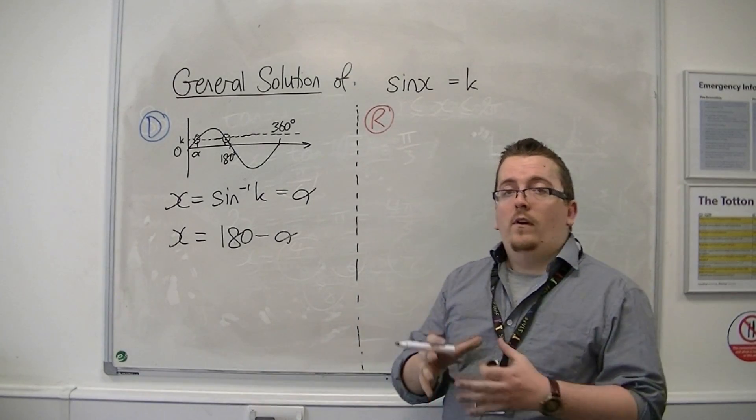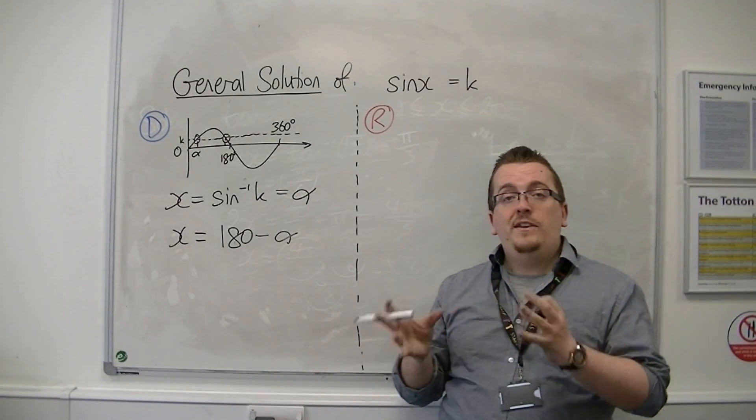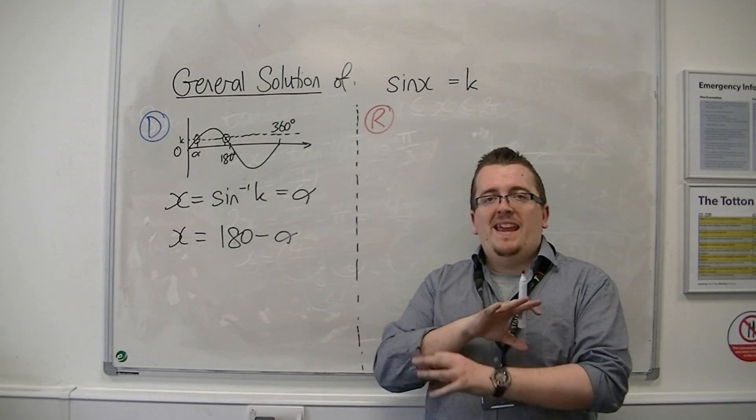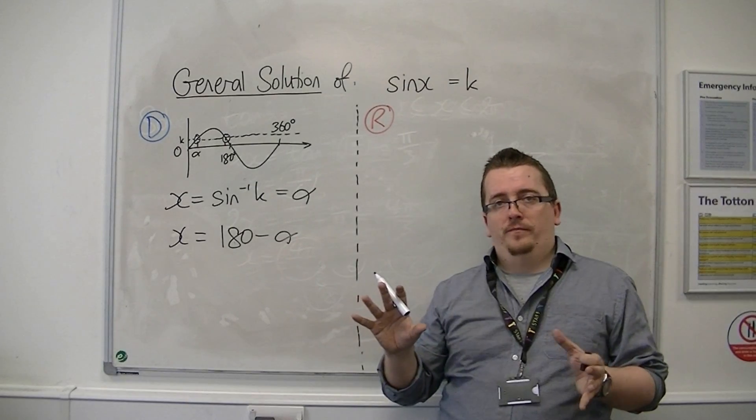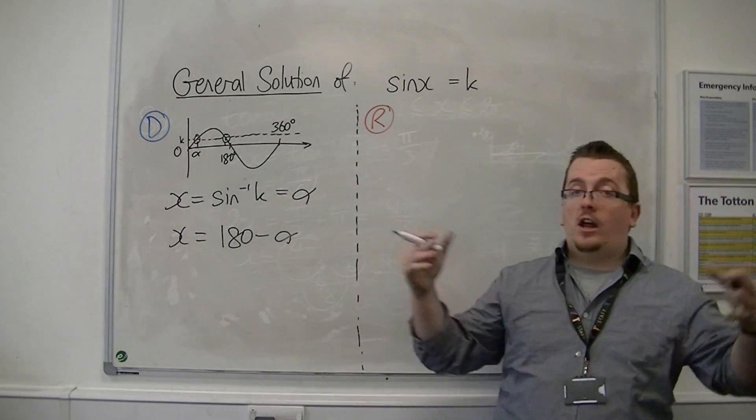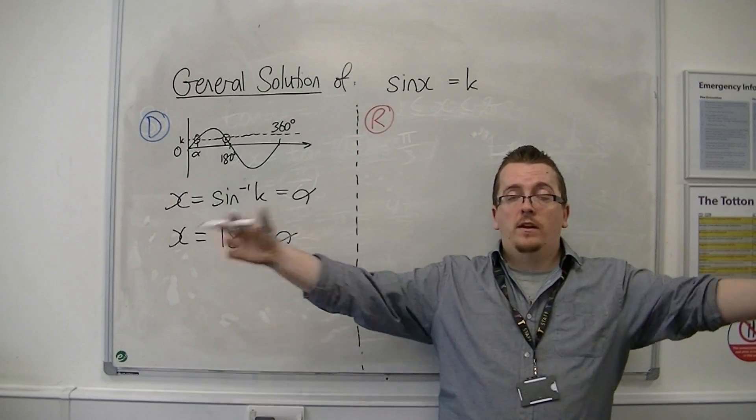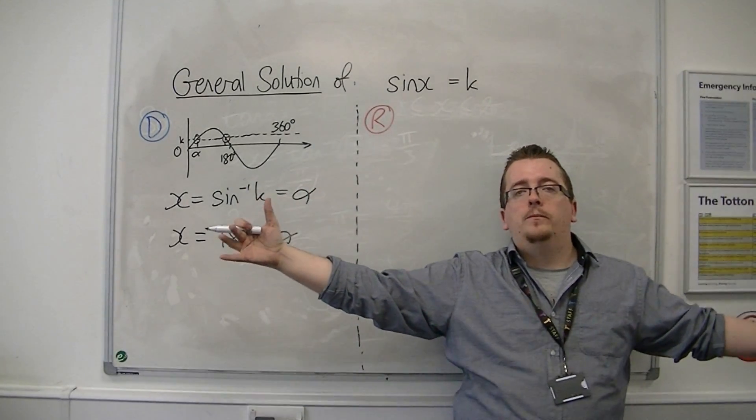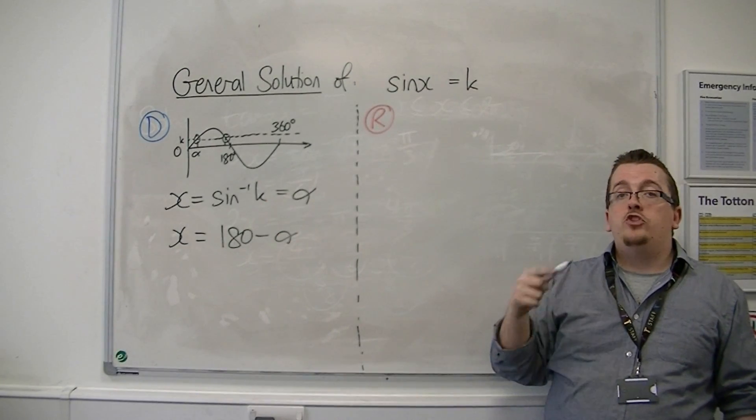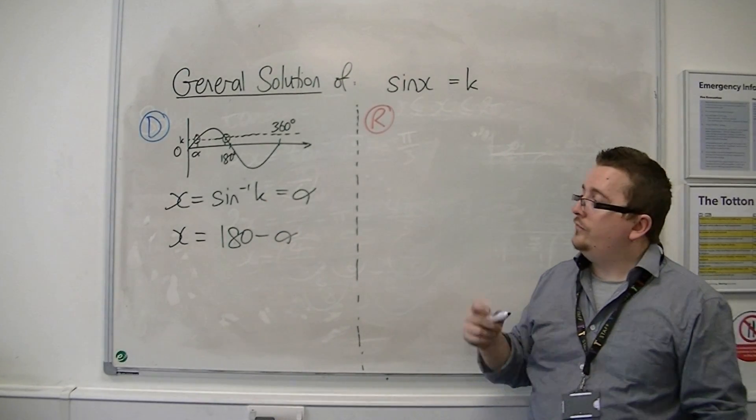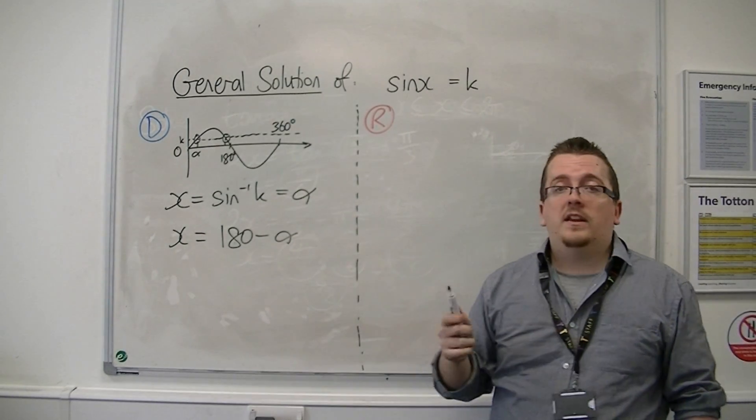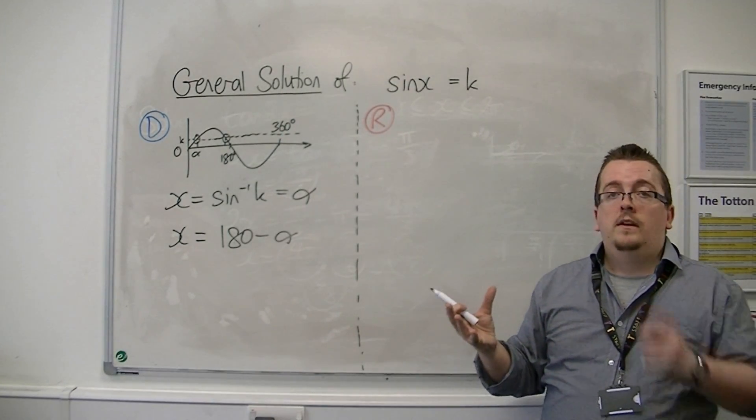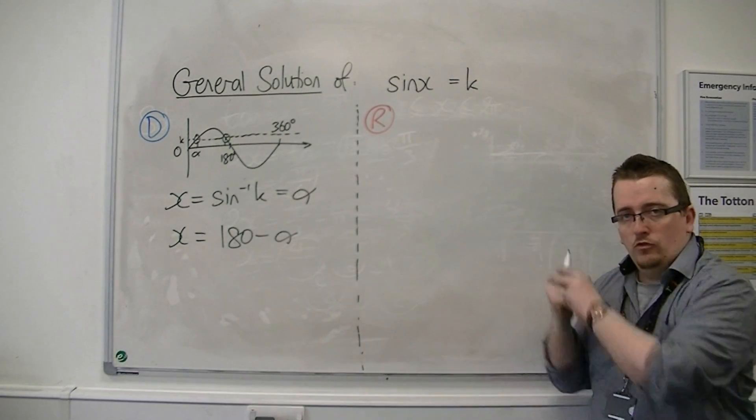Now if I am looking for the general solution, what that means is I want to write down an equation that will allow me to generate any solution I want. So if I want it between 0 and 100π, or 0 and 3600 degrees for example, then I want to be able to find a way of generating all of those. I've got the two answers that are going to keep recurring: the alpha and the 180 minus alpha between 0 and 360.